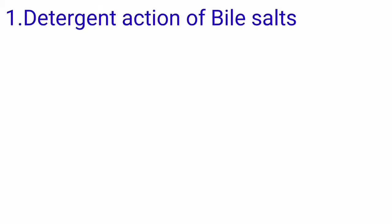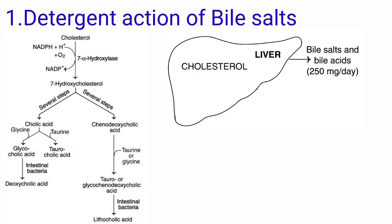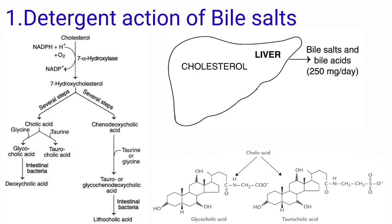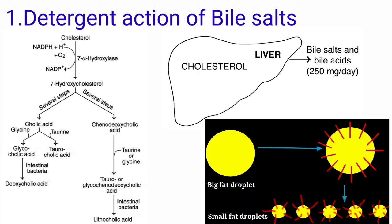Detergent action of bile salts: bile salts are synthesized from cholesterol in the liver. They are secreted with bile into the duodenum, and these bile salts possess a steroid nucleus with a side chain attached to either glycine or taurine. Bile salts are the most effective biological agents — they interact with lipid particles and aqueous duodenal contents and convert them into small particles. Bile salts also stabilize the smaller particles by preventing them from coalescing.